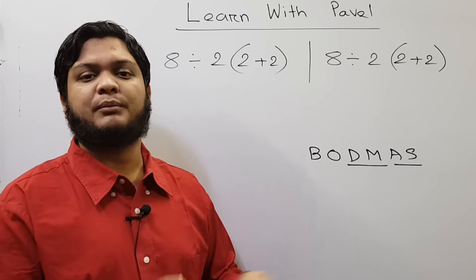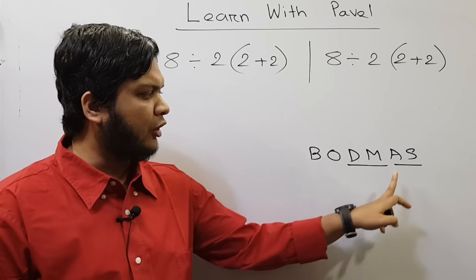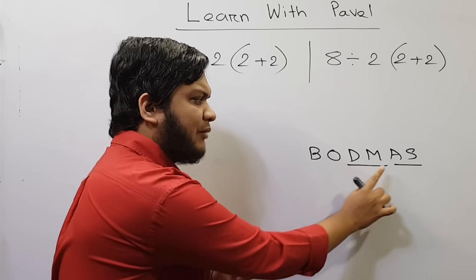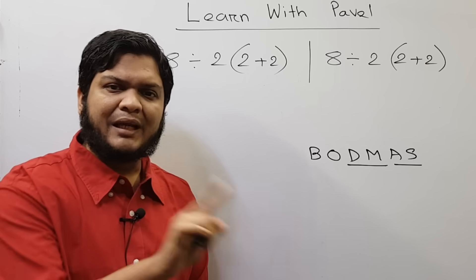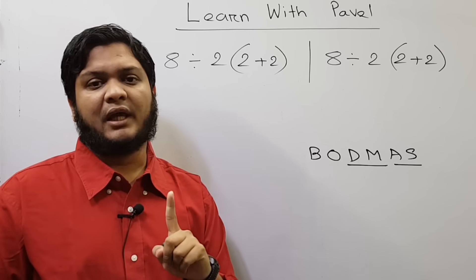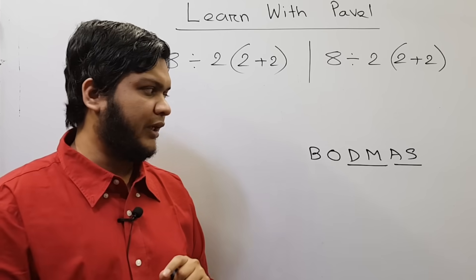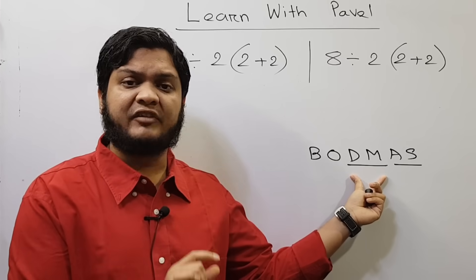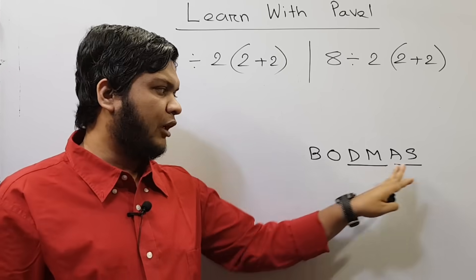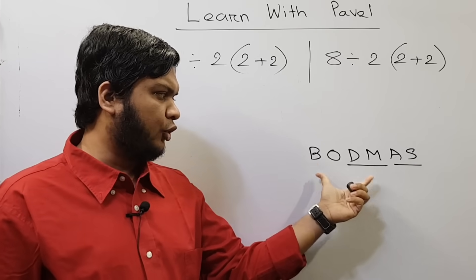But no — Division and Multiplication have the same priority. Similarly, Addition and Subtraction have the same priority. If Division and Multiplication both appear in the same line, we carry out the operation from left to right, whichever comes first. Remember: Division and Multiplication have the same preference, but whichever comes first from left to right, we carry out that operation. The same applies to Addition and Subtraction.